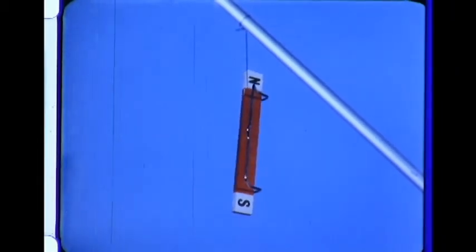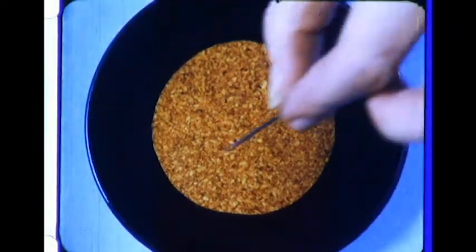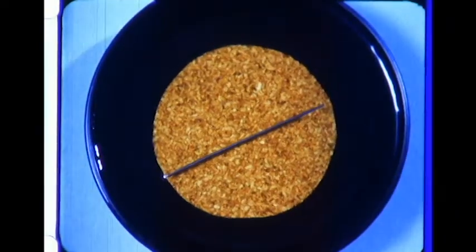How can we use the poles of a magnet? We'll take the needle we magnetized and put it on a piece of floating cork.